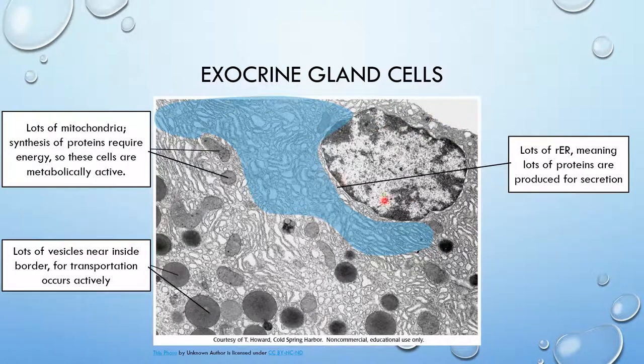Exocrine gland cells have lots of RER, meaning lots of proteins are produced for secretion and they also have lots of mitochondria because the synthesis of proteins require energy and need mitochondria to carry out metabolism. Lots of vesicles exist near the inside border because they need to transport these enzymes from this cell to the outside environment.